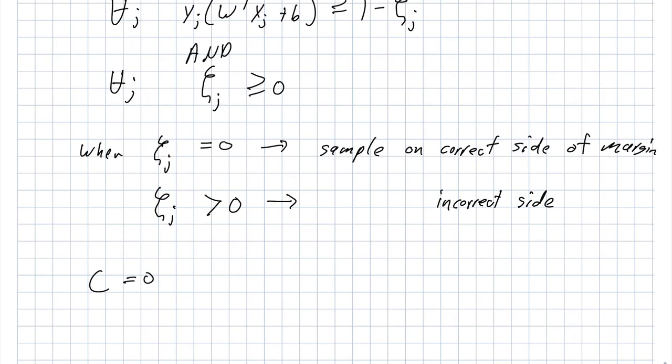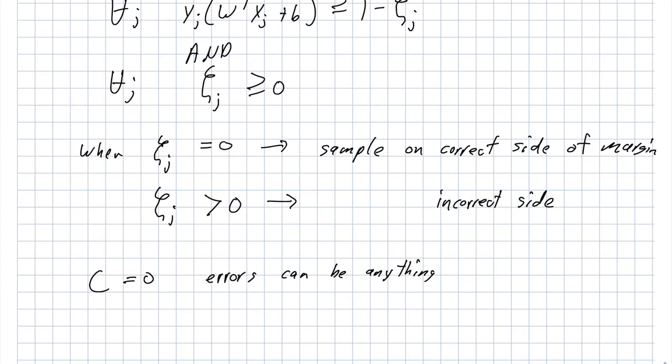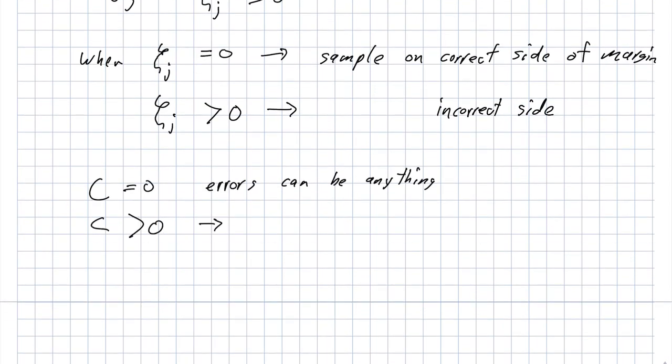And now let's talk about the meaning of C. So when C is equal to zero, errors can be anything. And this means that the solution that the algorithm finds can put the training set elements on either side of the dividing line. For C something greater than zero, this implies that errors matter. So we're going to punish errors. And as C approaches infinity, this is the case of having a hard boundary. So we're returning to that hard boundary algorithm that we had before.